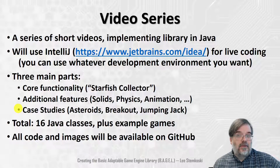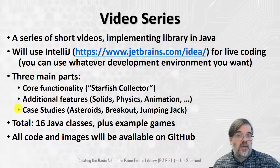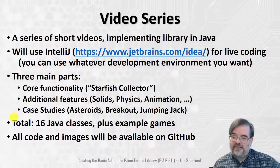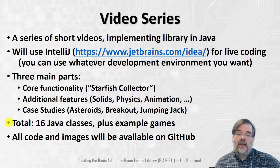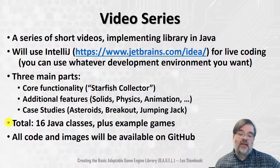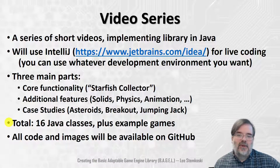In the final third, we'll see just how flexible this engine can be. We'll work through a series of case studies — other video games that can be implemented with this library. The three games I'm planning to implement will include Asteroids, Breakout, and a platform-style game called Jumping Jack. Altogether over the series of videos, we'll be implementing a total of 16 classes in Java, plus a series of example games — Starfish Collector, Asteroids, and Breakout — which extend these core classes.